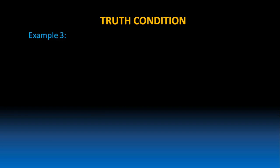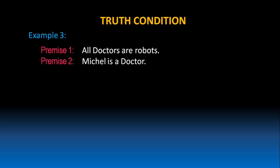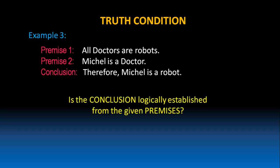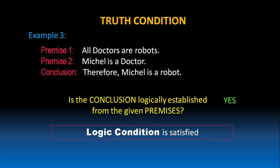Let's take one more example. All doctors are robots. Michael is a doctor. Therefore, Michael is a robot. In this example, is the conclusion logically established from the given premises? Yes, of course, because premise 1 says all doctors are robots, we can conclude that Michael is a robot because he is a doctor. So, the logic condition in the above argument is satisfied.